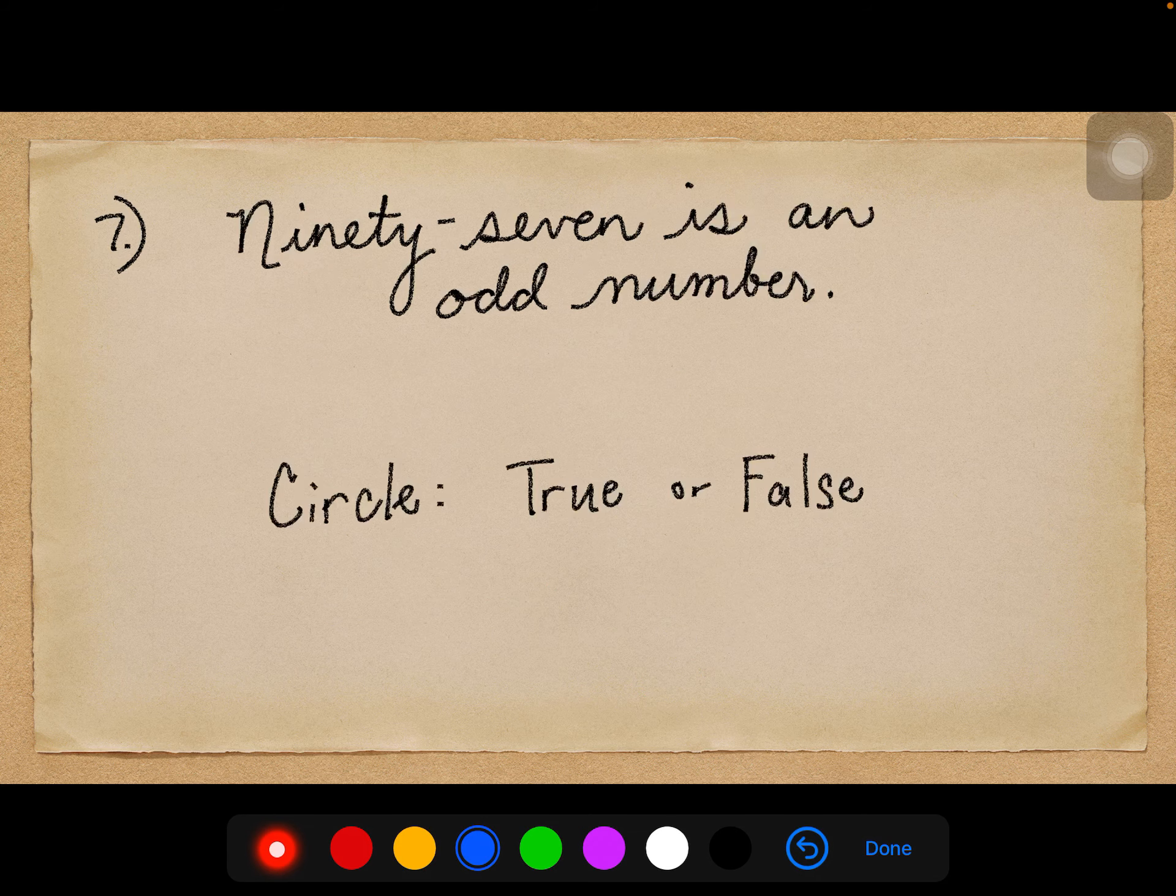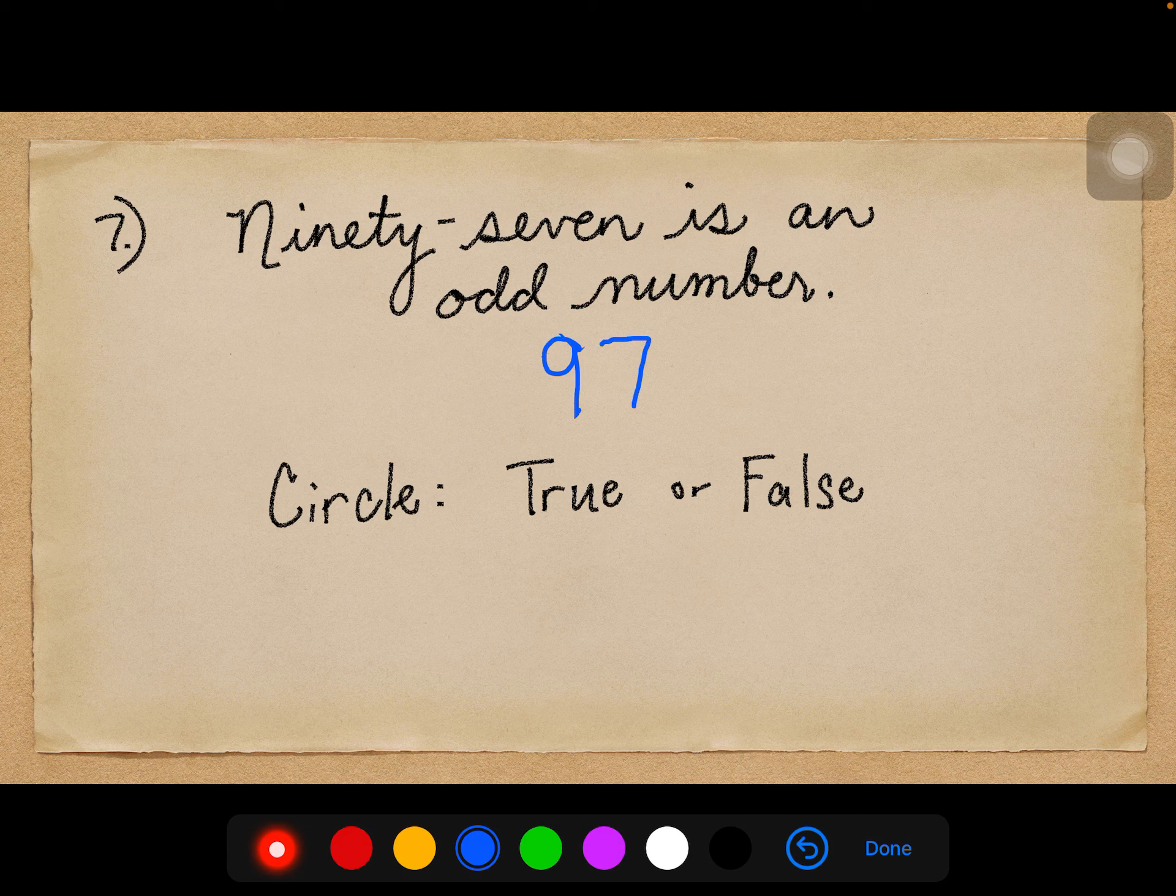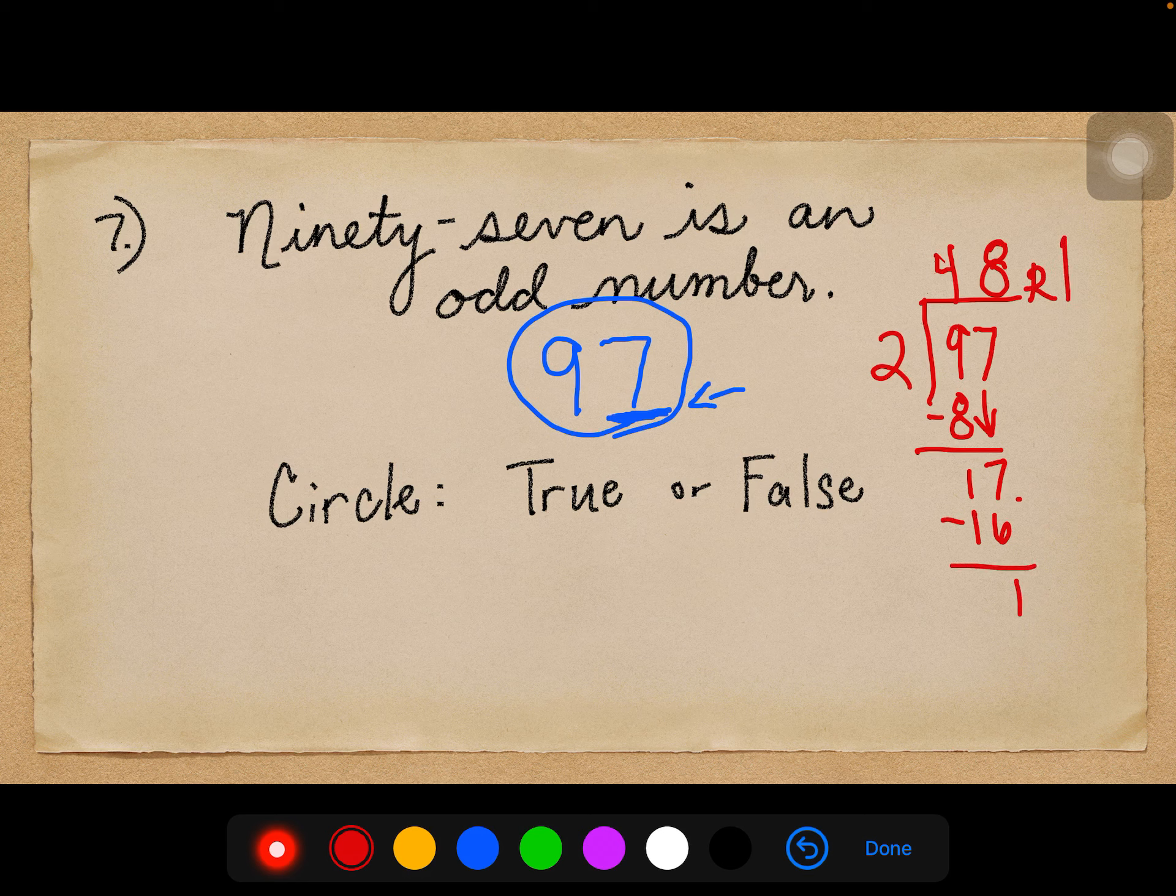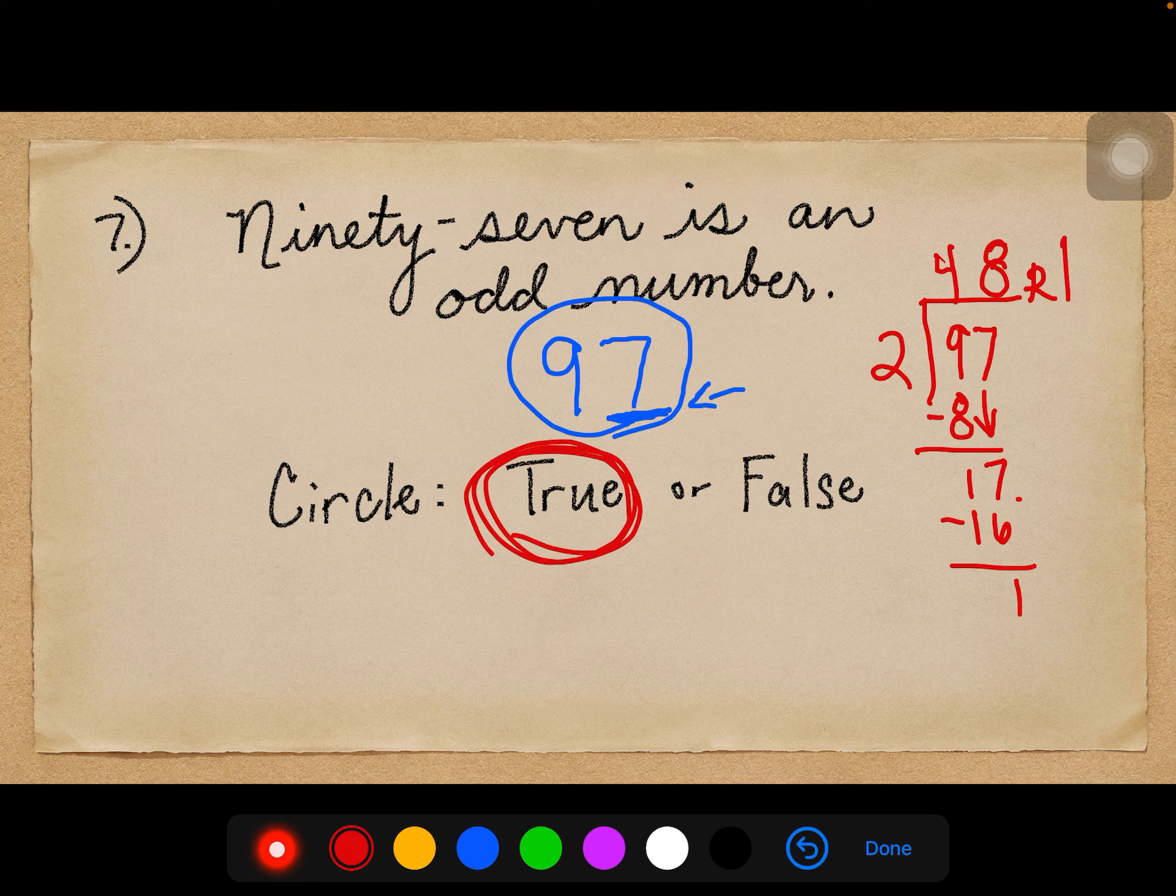Number 7 says 97 is an odd number. 97. Now, in the rules of divisibility, 7 cannot be divided evenly by 2, because there will be a remainder. So I just need to look at that number in the ones place in order to tell you that 97 is odd, because of the 7, but I can prove it to you as well. I can take 97, and I can divide it by 2. If it divides up evenly, it's an even number. If there's a remainder, it's an odd number. So this goes in 4 times, and 2 goes into 17 8 times with a remainder of 1. So because there is a remainder, it is an odd number. So that is true.